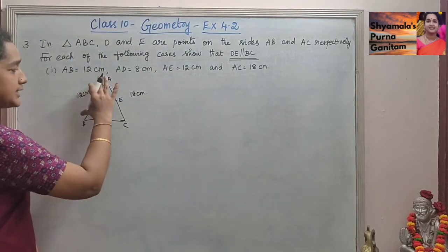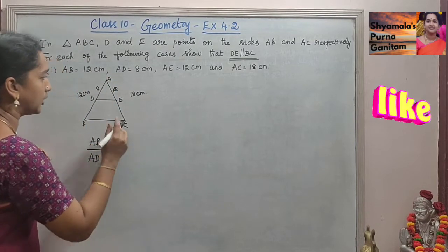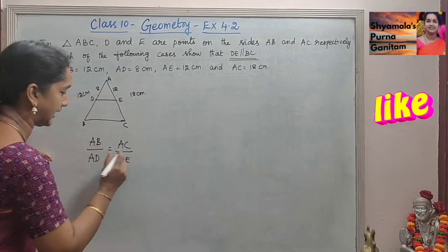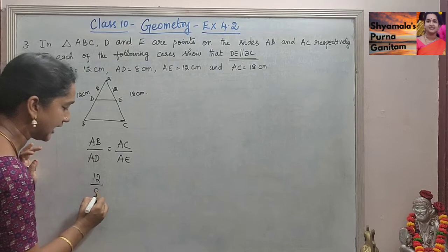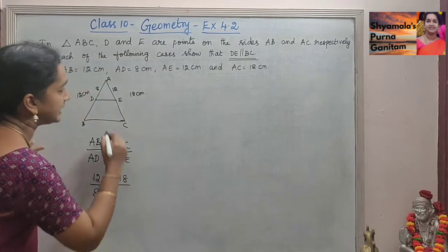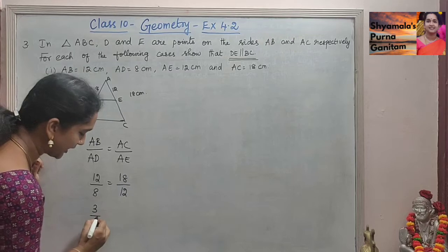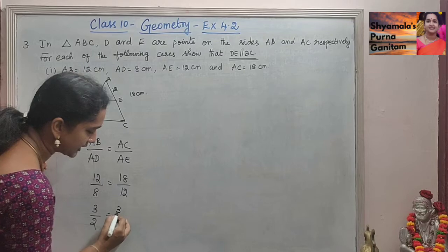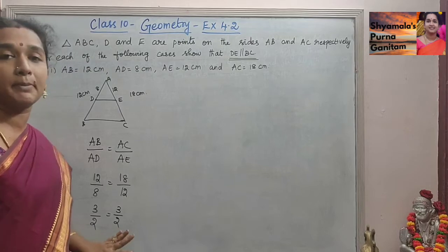Now if we check this: AB divided by AD equals AC divided by AE. AB is given as 12 cm and AD as 8 cm, so that gives 12 by 8. AC is 18 and AE is 12, giving 18 by 12. When we simplify individually, 12 by 8 simplifies to 3 by 2, and 18 by 12 also simplifies to 3 by 2. So 3 by 2 equals 3 by 2 — the sides are proportional.